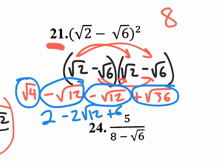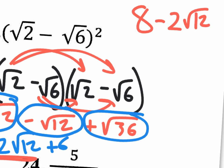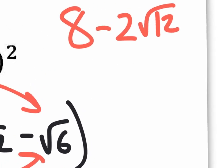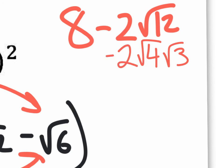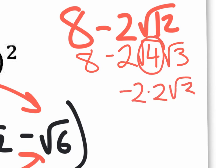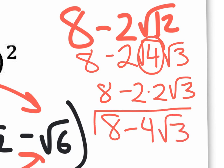You still have the minus 2 square root of 12 left over. Some people will say they're done, but you could still work on the square root of 12. The square root of 12 can be rewritten as 4 times 3. When you split the root, bringing down the negative 2 and the 8 in front, the square root of 4 is really 2. So you have negative 2 times 2 times the square root of 3, which gives you negative 4 square root of 3. So the final answer is 8 minus 4 square roots of 3.